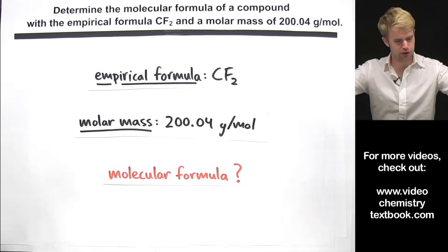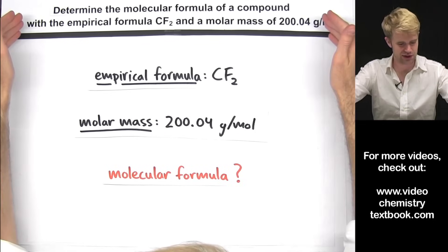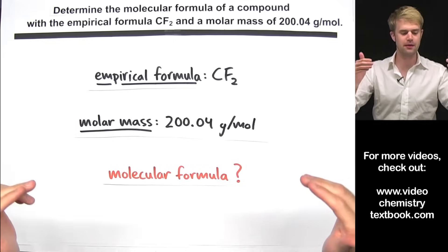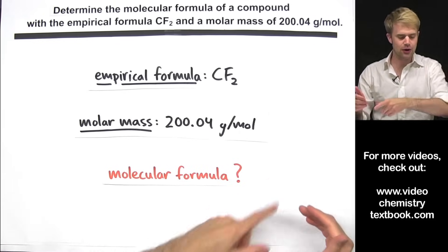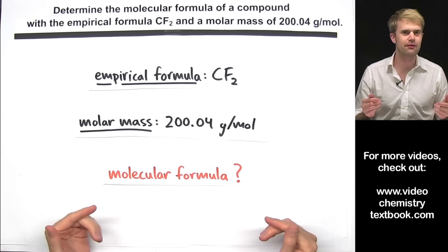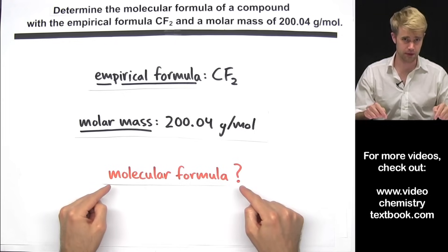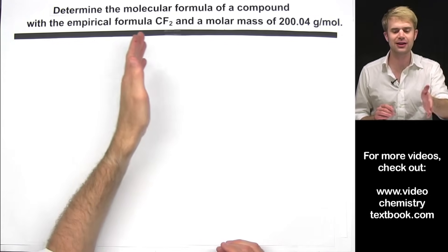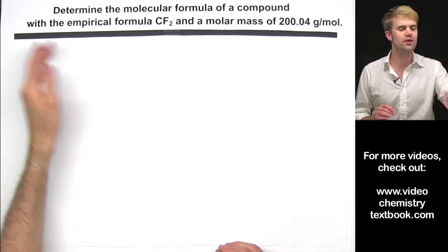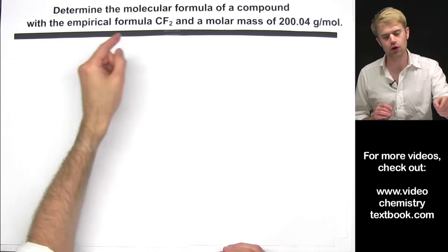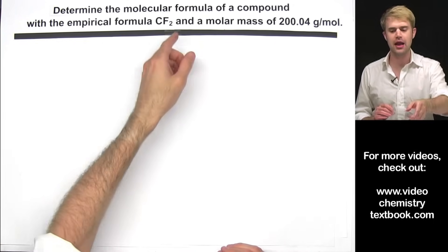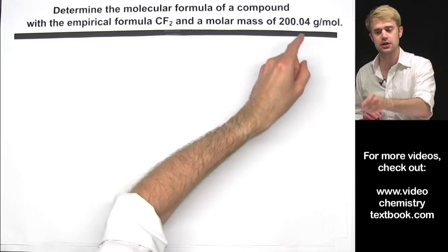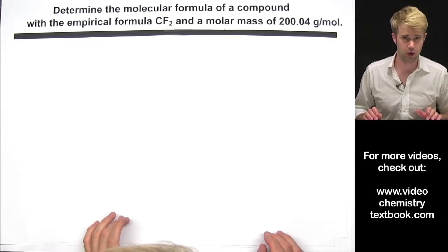Here we're going to learn how to solve problems where we're given the empirical formula and the molar mass of a compound and we have to figure out that compound's molecular formula. We're asked to determine the molecular formula of a compound with the empirical formula CF2 and a molar mass of 200.04 grams per mole.